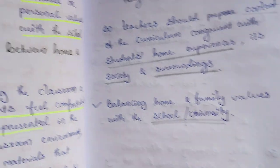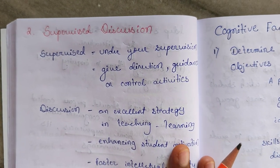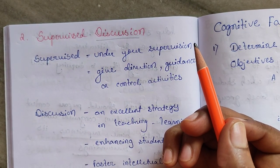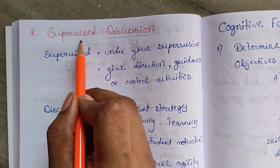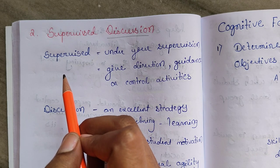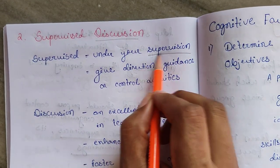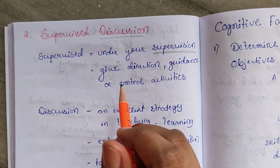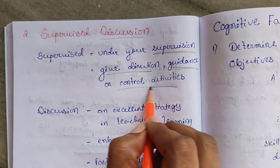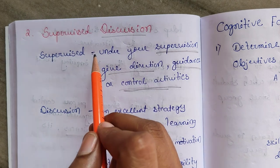Now the second question: what do you mean by supervised discussion? Discussion means to discuss about a topic or content. Supervised — think about supervision — means under your control. Supervisors give direction, give guidance, and control activities. So in supervised discussion, the teacher is the supervisor who gives supervision, direction, guidance, and controls students' activities.